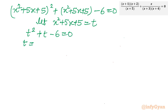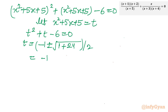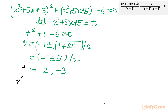Let us apply the quadratic formula: minus b plus or minus square root of (b² minus 4ac) over 2a. We get square root 25 which is 5 over 2a. Taking the plus sign gives t equal to 2, and taking the minus sign gives t equal to minus 3.